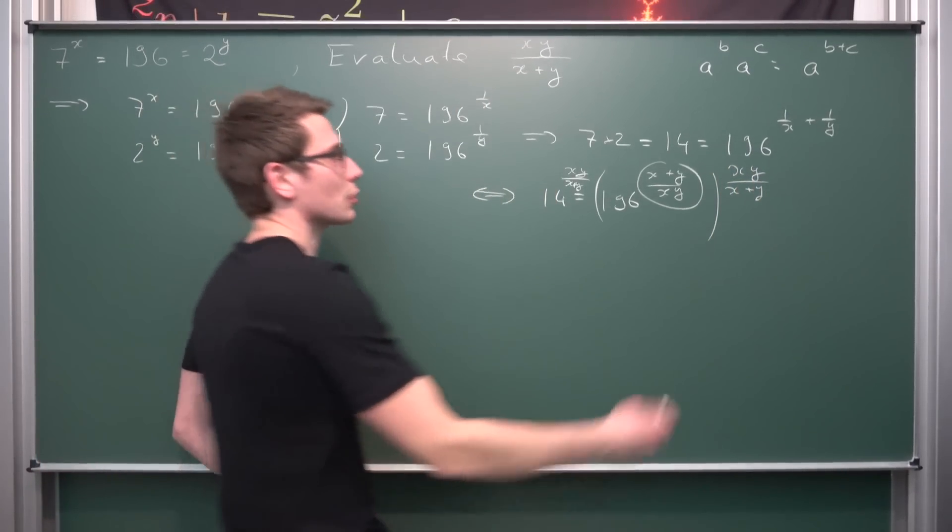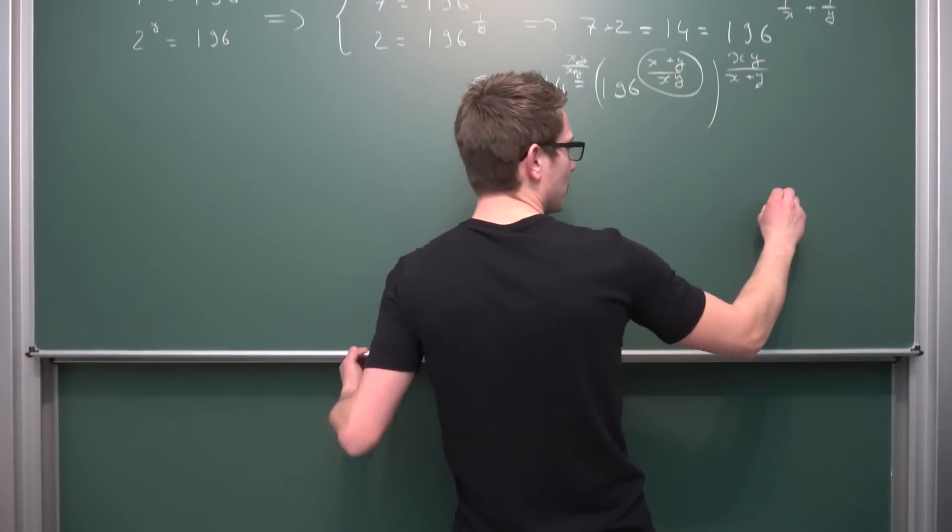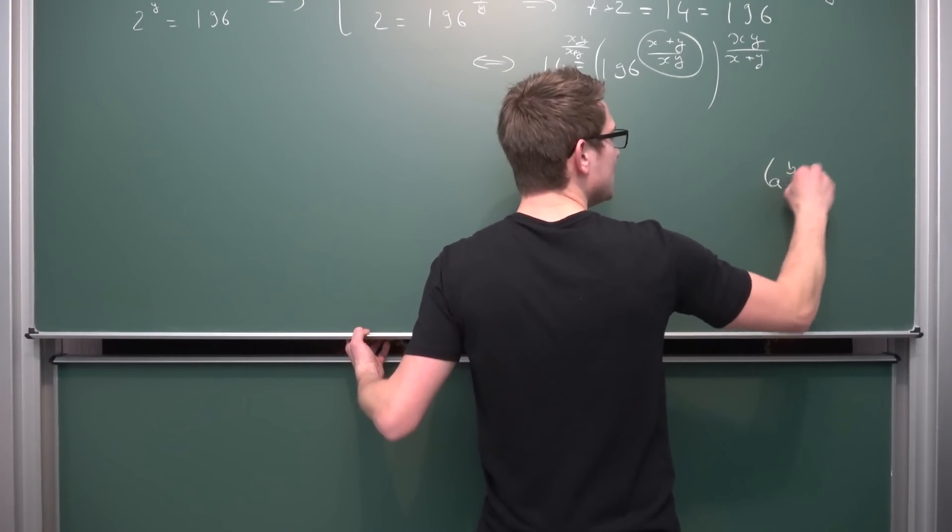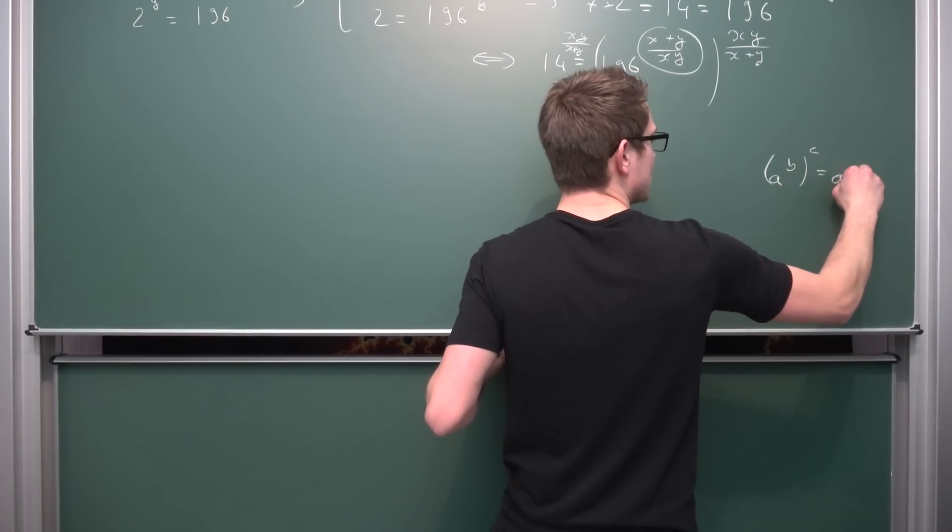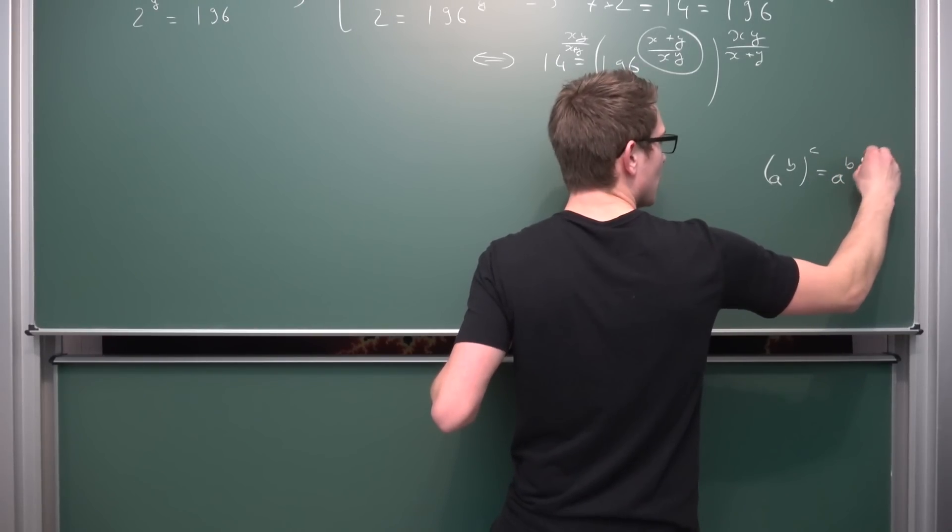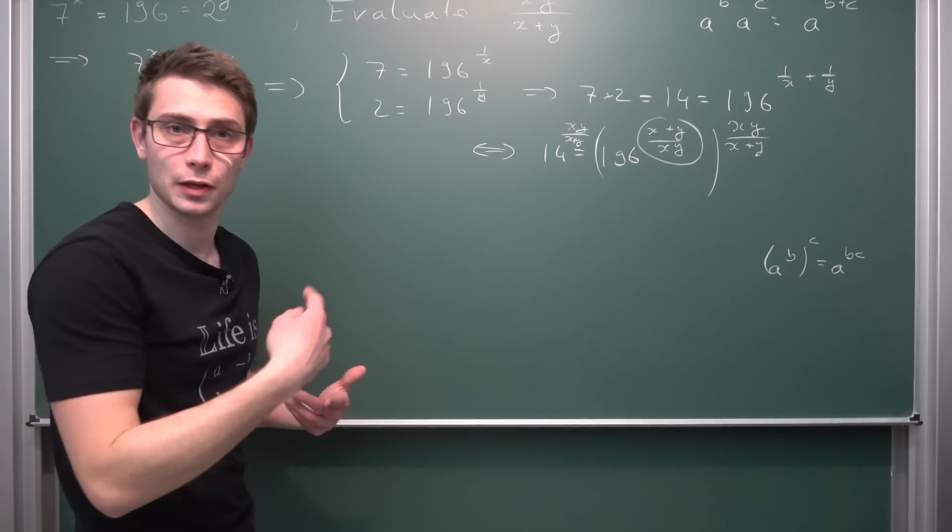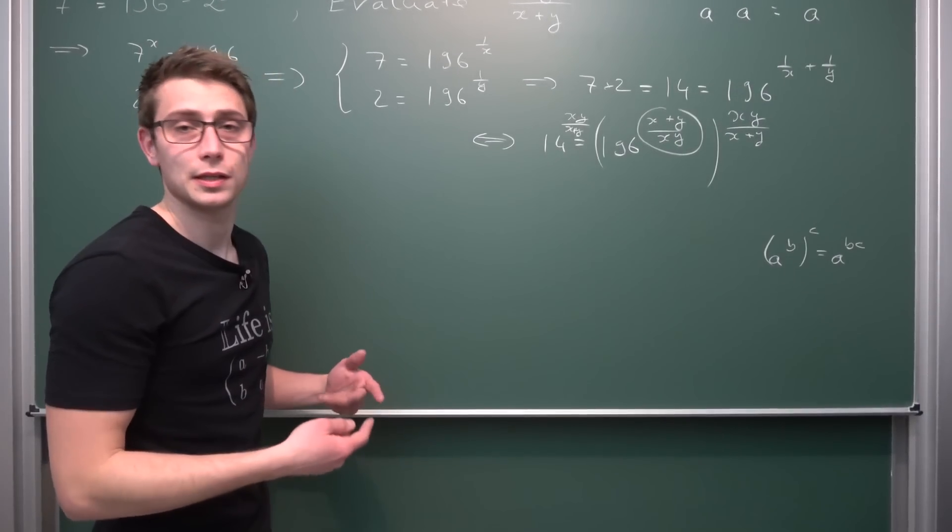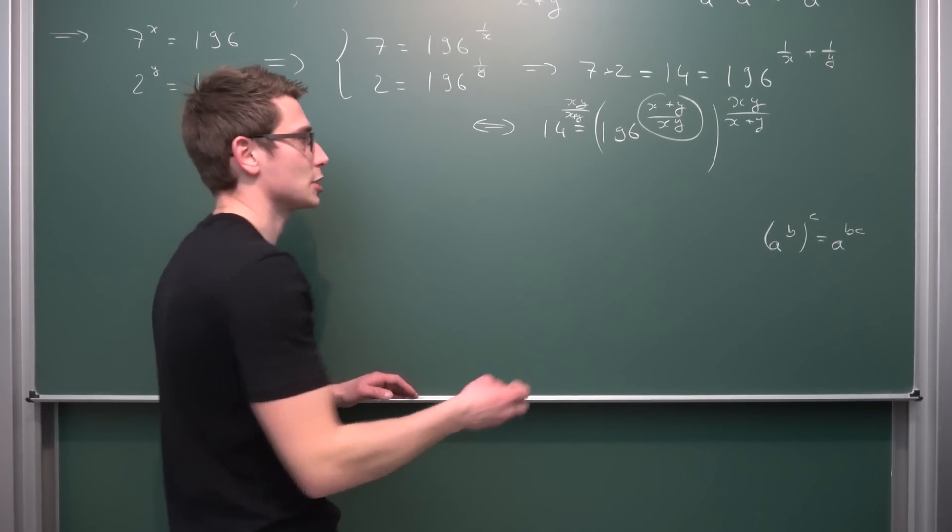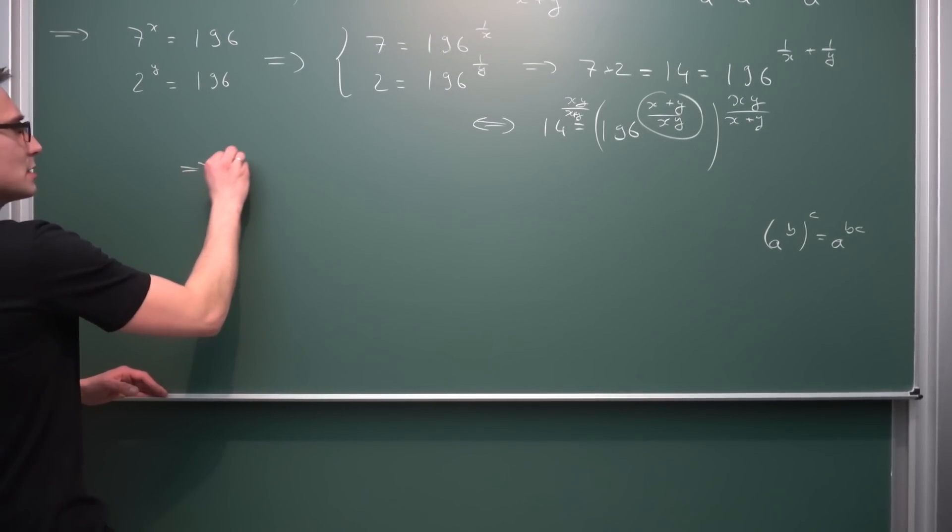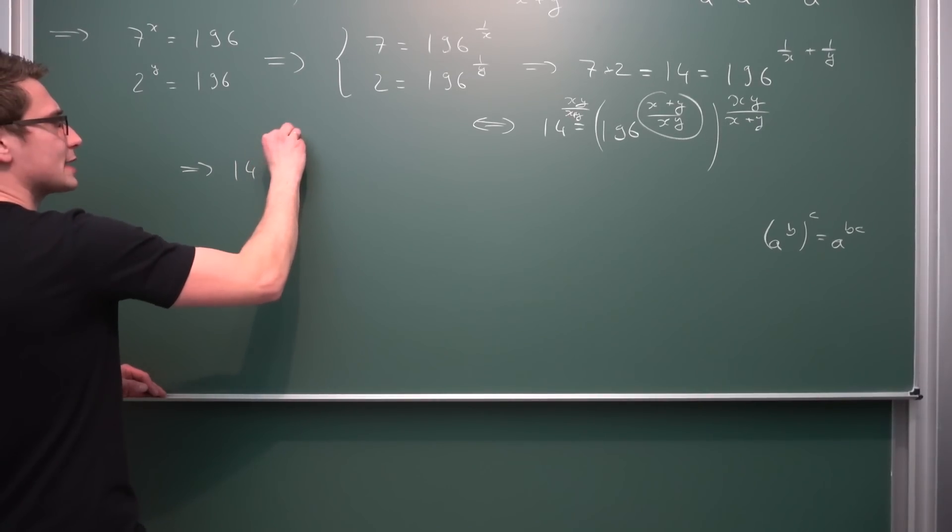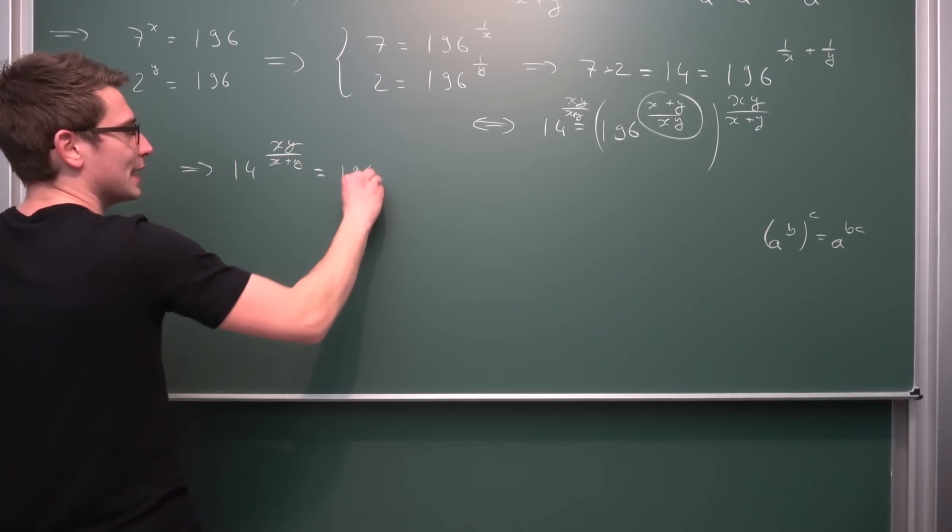By the exponentiation rules, I'm going to write it out for all of you who are not familiar with that. So a to the b to the c power is the same as a to the b times c power. Meaning if we were to multiply those two together, reciprocal multiplied with the regular number is just the identity in general. Meaning what we are going to get is 14 to the xy divided by x plus y power is equal to 196.